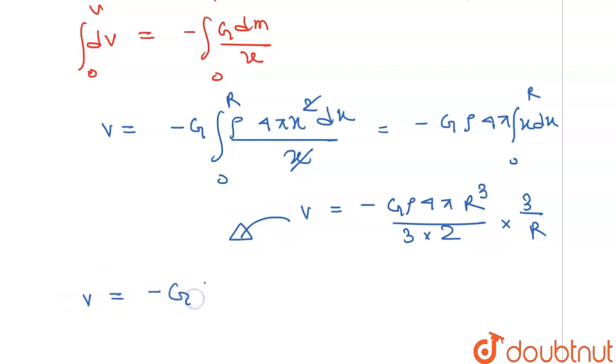V equals negative of G into rho into 4 by 3 pi r cubed over m into 3 by 2 r.